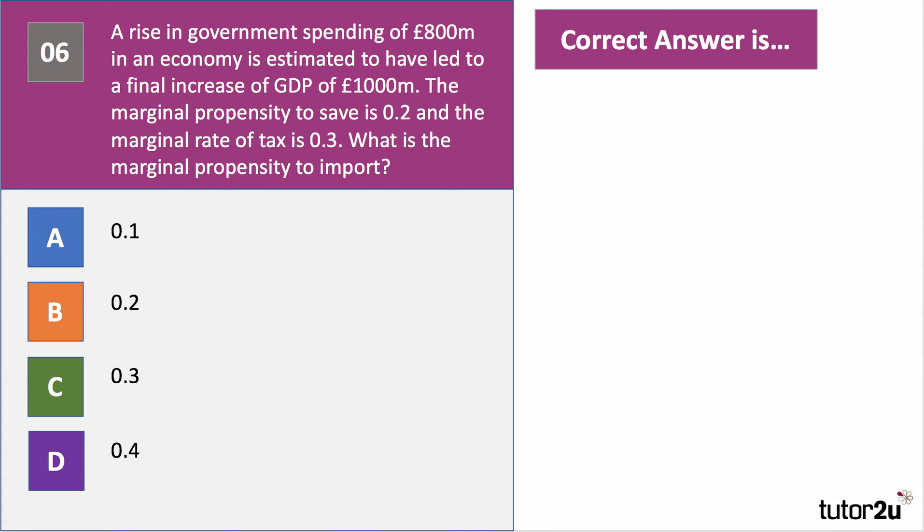Here's question six, a calculation question. A rise in government spending of £800 million in an economy is estimated to have led to a final increase in GDP of £1,000 million. We're told the marginal propensity to save is 0.2 and the marginal rate of tax is 0.3. The question is: what is the marginal propensity to import? Have a go at question six.